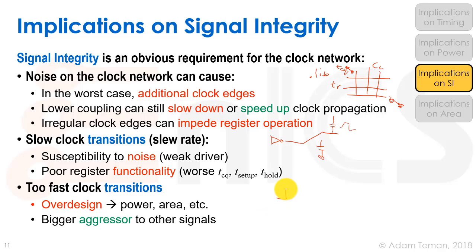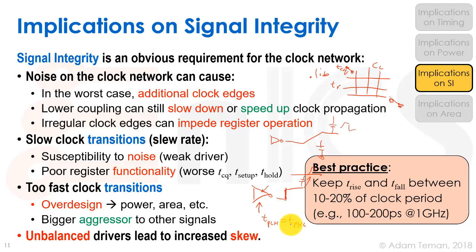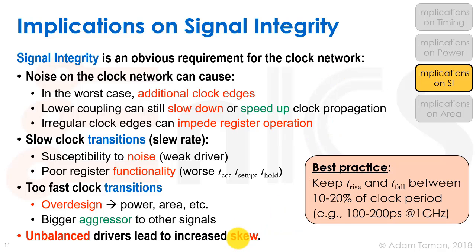As a best practice, keep T-rise and T-fall between 10–20% of the clock period — roughly 100 to 200 picoseconds at 1 GHz. Also, standard cell clock elements are balanced: TpLH ≈ TpHL and T-rise ≈ T-fall at the output, which helps keep skew lower compared to unbalanced elements.